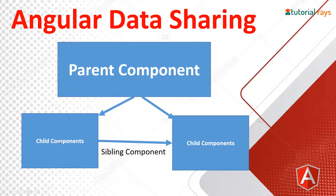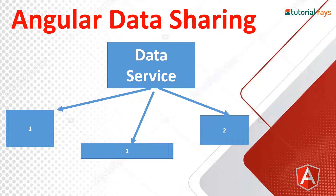We will see passing data from parent component to child component, or child component to parent component. Apart from that, there are some cases when we may have to pass data between two child components — sibling components. Then there are cases when you have many other components with no parent-child relationship, but we need to access data stored in a data source from any component — these are unrelated components. So let's start with practical examples one by one.